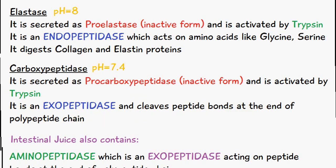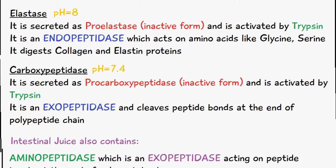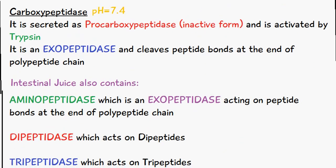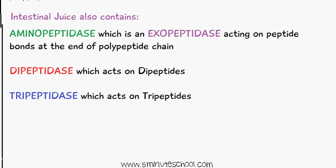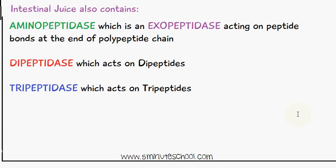Those are the enzymes secreted in the pancreatic juice. We also have enzymes in the intestinal juice: aminopeptidase, which is an exopeptidase acting on peptide bonds at the end of the polypeptide chain; dipeptidase, which acts on dipeptides; and tripeptidase, which acts on tripeptides.